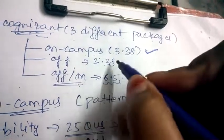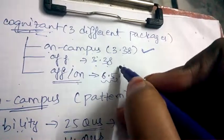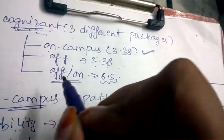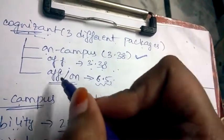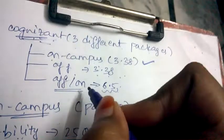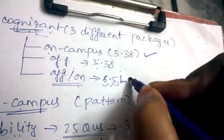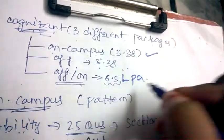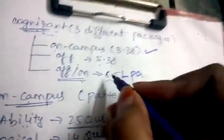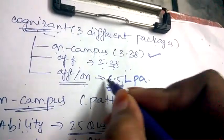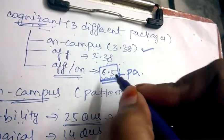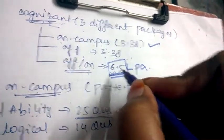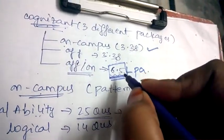For off-campus, it provides 2.28 lakh, whereas there is another special package which is for both off-campus and on-campus, which is 6.5 lakh per annum. But in order to get this package, you need to work technically very hard and you need to even know the advanced knowledge of the technical things.